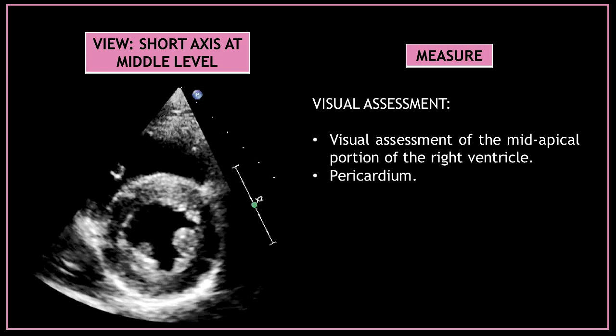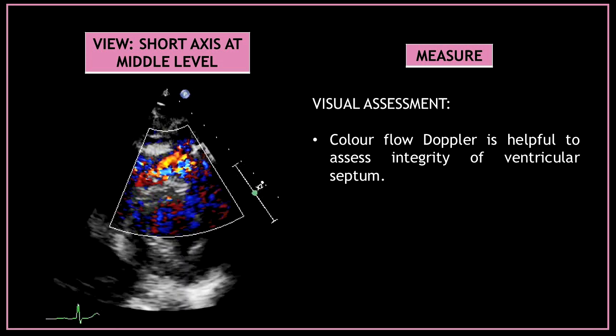In this view we can also visualize the right ventricle, so do a visual assessment of the middle apical portion of the right ventricle. You can also do a visual assessment of the pericardium. At this level you can also look for any septal defects — using color flow Doppler is very helpful here to assess the integrity of the left ventricular septum.